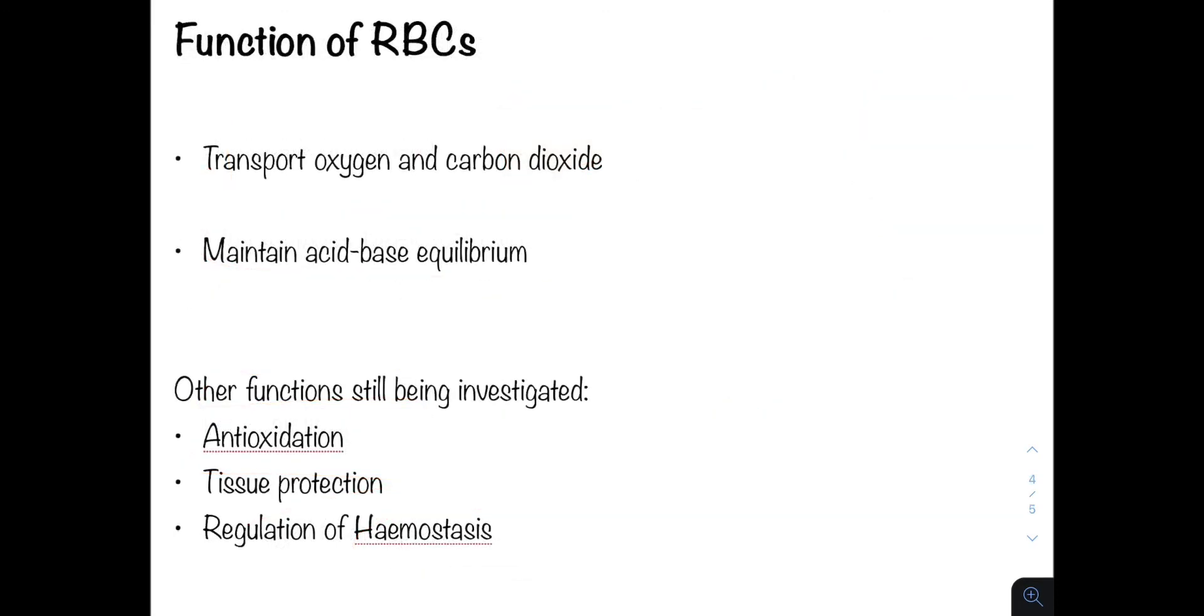Now onto the function of red blood cells. This will be more of an introductory. We will discuss the synthesis, structure and function of hemoglobin, which is the primary component of red blood cells, in the next video. The main physiological role of red blood cells is the transport of oxygen and carbon dioxide. This is why hemoglobin is so important. Hemoglobin contains iron or Fe. The iron is capable of binding to oxygen.